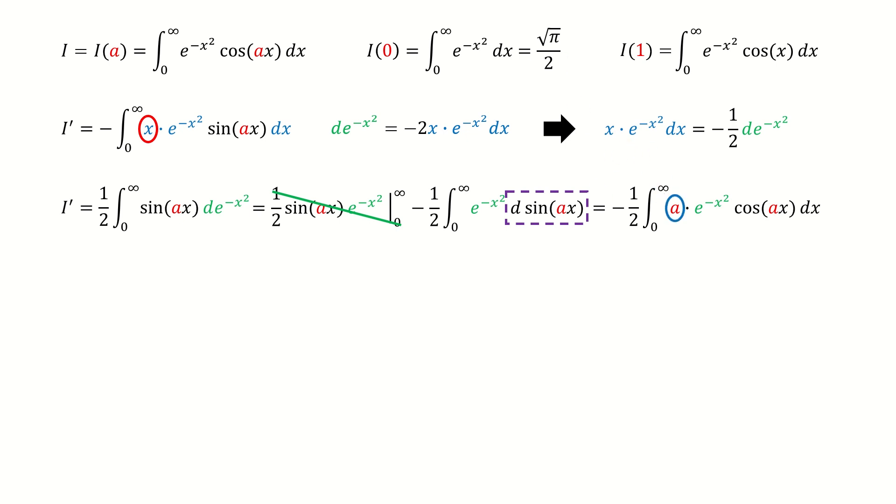And note for this a here, it's coming from the chain rule. And we take this factor a out of the integral. Now, if we compare this term to the initial definition, we can see it equals to the function I. So we replace it with the capital I here.